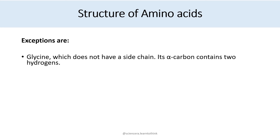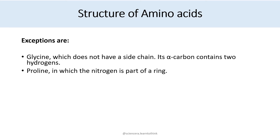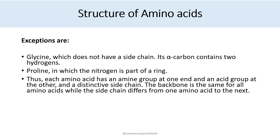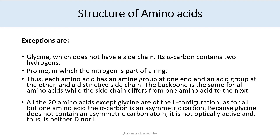Exceptions to the structure of amino acids include glycine, which does not have a side chain — its alpha carbon contains two hydrogens — and proline, in which the nitrogen is part of a ring. Thus, each amino acid has an amine group at one end, an acid group at the other, and a distinct side chain. The backbone is the same for all amino acids, while the side chain differs from one to the next.